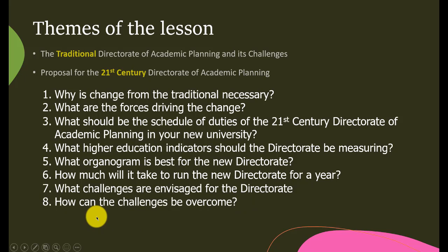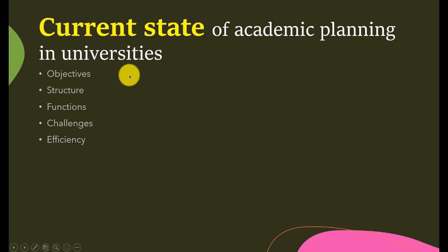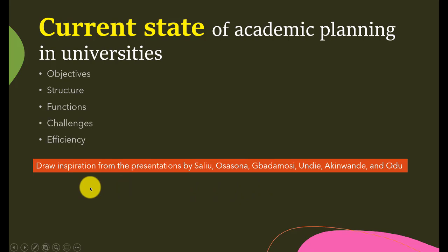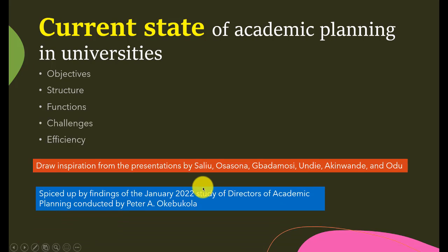Let's move on to the current state of academic planning. We're going to be looking at the objectives of academic planning as they stand today — the structure, functions, challenges, and efficiency. We're drawing largely from presentations by Salio, Sherson, Badamoysi, Undie, Akimwande, and Uduk — separate presentations we had during the course. I also conducted a study in January, just before this course took off, of directors of academic planning.